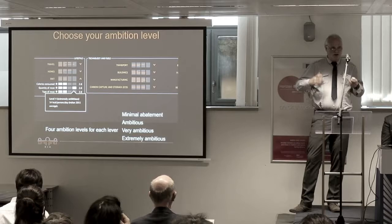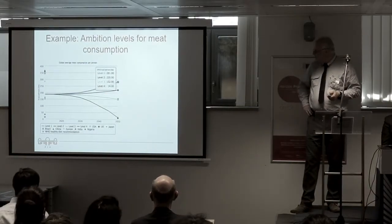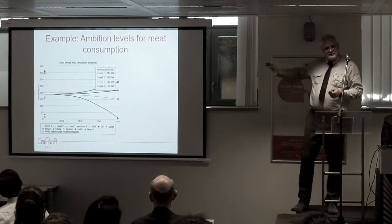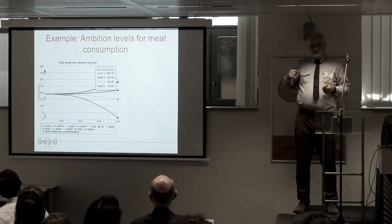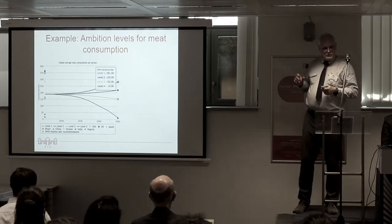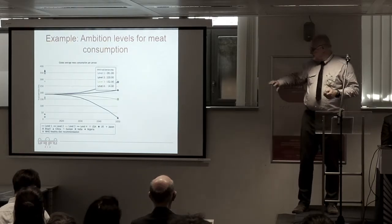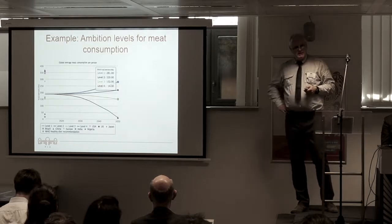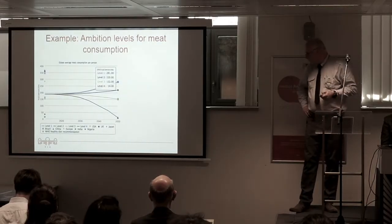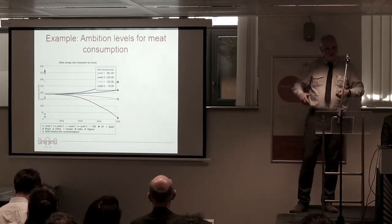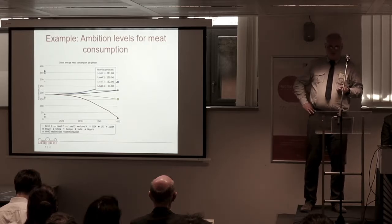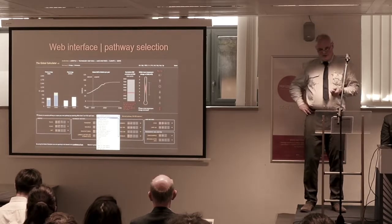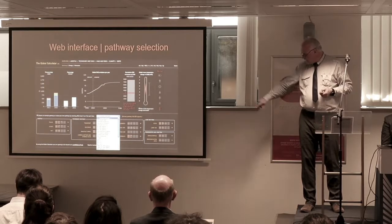You see, for example, the level-four setting for quality of meat. Here you see the ambition levels for meat consumption, and everything is documented very well in the platform, because the user may want to know where these numbers come from. For meat consumption, for instance, we considered the WHO proposal for a healthy diet. So everything is well based on literature and expert assessment of course.